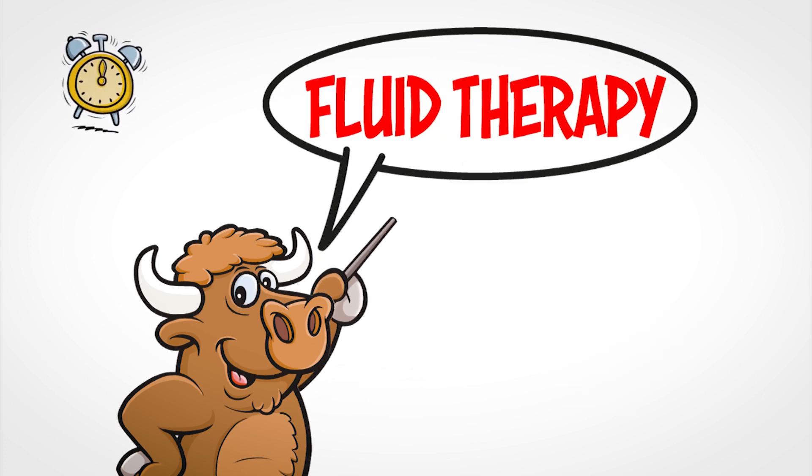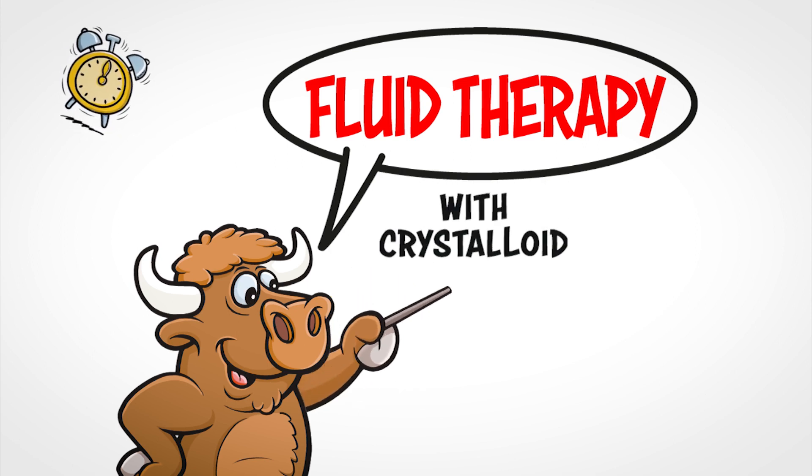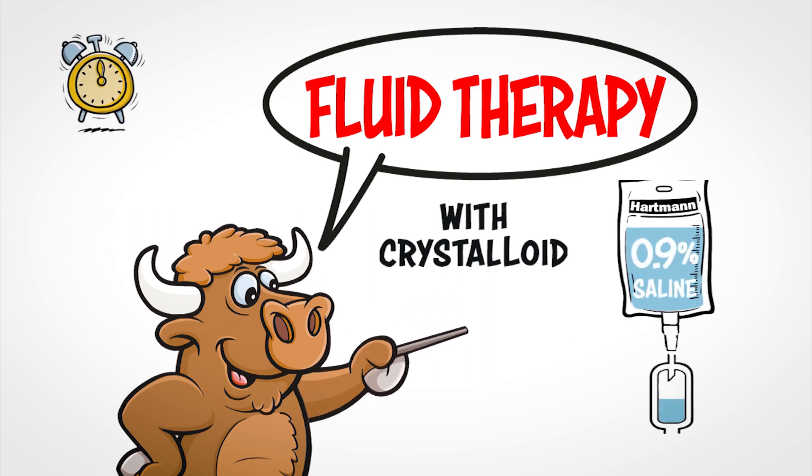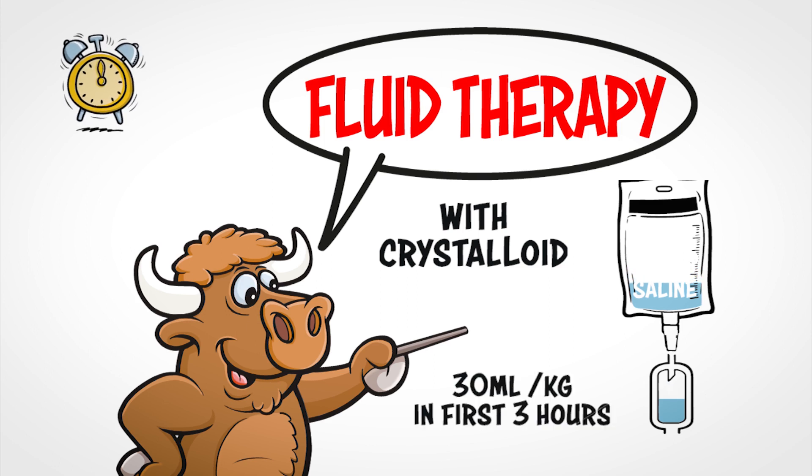F is for fluid therapy. Blood vessels become leaky as a result of sepsis and fluid leaks out into the tissues. Blood vessels also dilate and this can cause low blood pressure, reduce perfusion to organs and eventually multi-organ failure. Reach for crystalloid fluids such as Hartman's or 0.9% saline for resuscitation and aim to resuscitate with an initial fluid bolus and an aim of achieving 30 mls per kilogram in the first three hours.